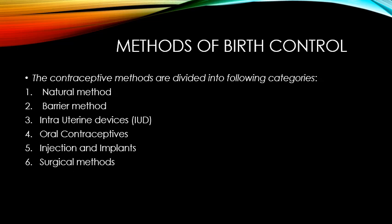Methods of birth control — the contraceptive methods are divided into the following categories: number one, natural methods; number two, barrier methods; number three, intrauterine devices (IUD); number four, oral contraceptives; then injections and implants; and the last one is surgical methods. These methods are used to keep a gap between two children and to control the birth rate.